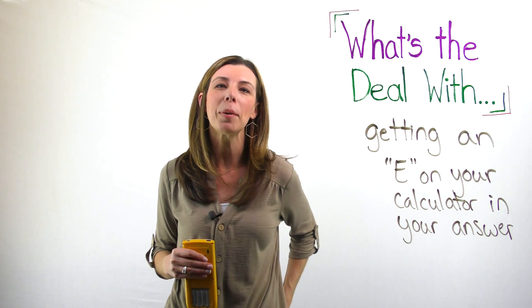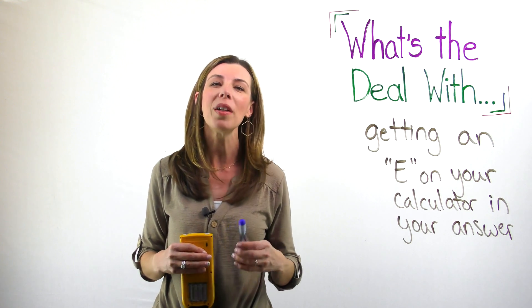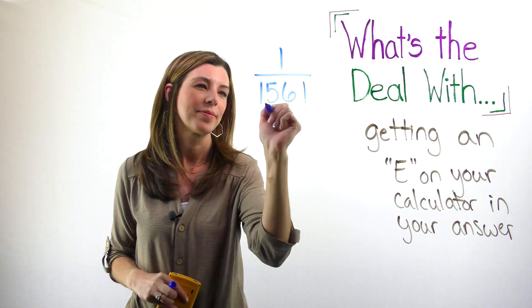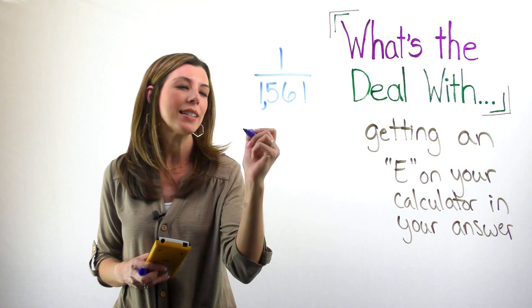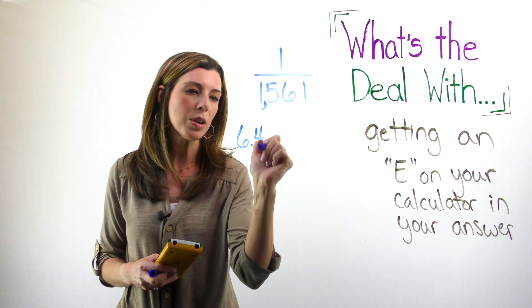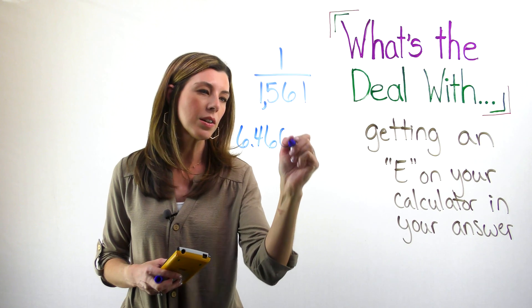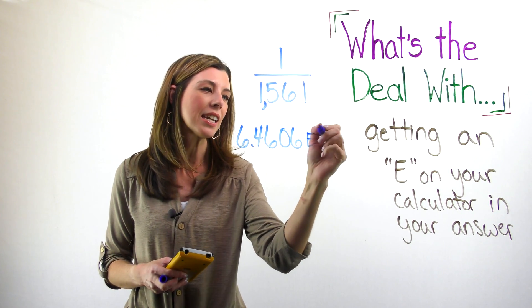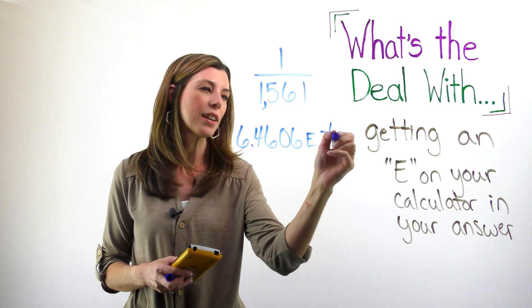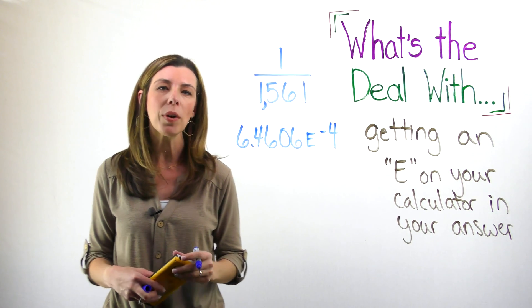Let's start by taking the problem 1 divided by 1561. Go ahead and put that in your calculator and let's see what it spits out. So I get 6.4606 and it keeps on going but then I get this weird little e and then I've got this negative 4. So let's talk about what that means.